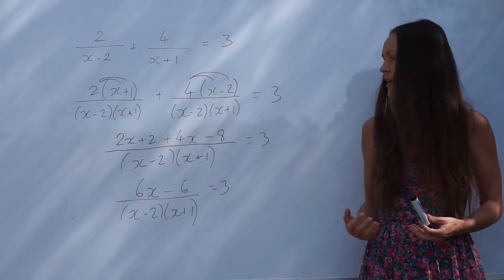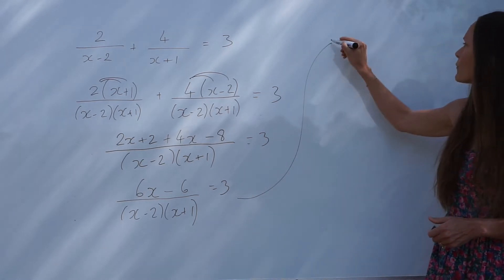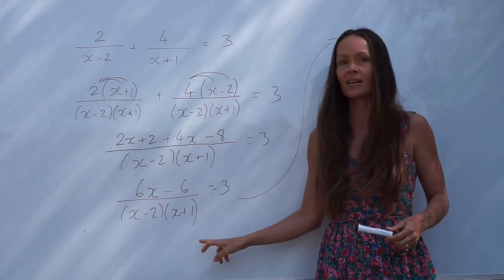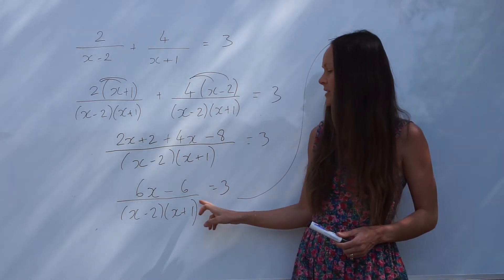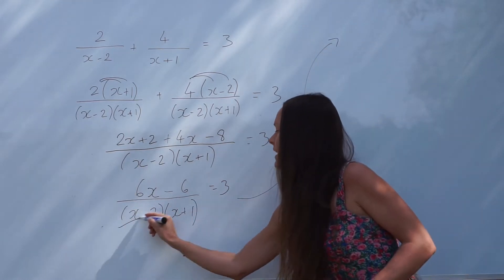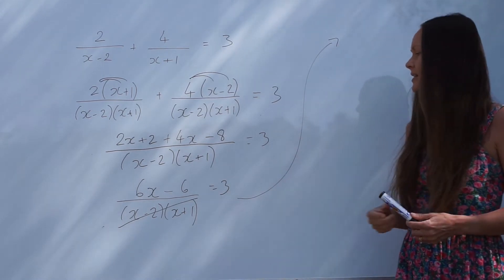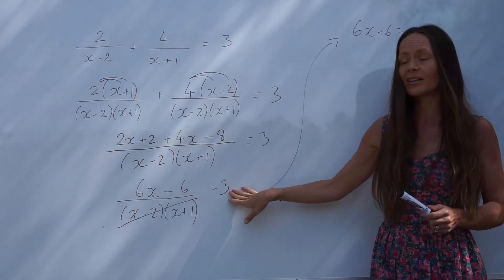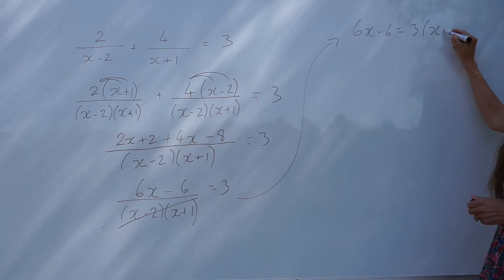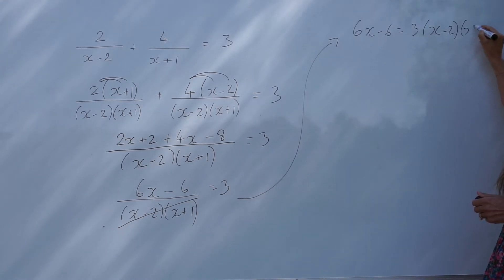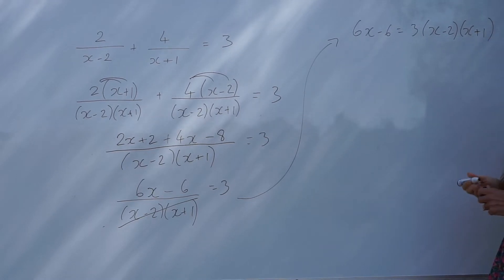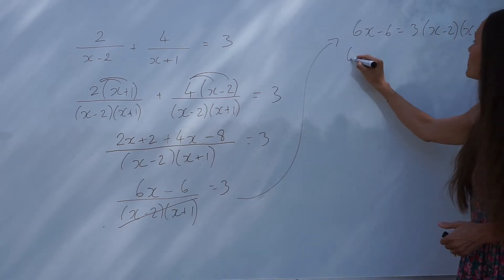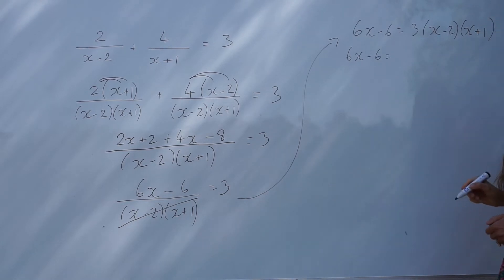Now we need to get rid of this fraction on the left-hand side. To do that, multiply both sides of the equation by the denominator. When you multiply the left-hand side by this denominator, it just cancels, and you're left with the numerator: 6x minus 6. On the right-hand side, if we multiply 3 by that denominator, it looks like 3 multiplied by the bracket. Remember, when you see brackets it means you're multiplying everything together. So we need to expand these double brackets and simplify.